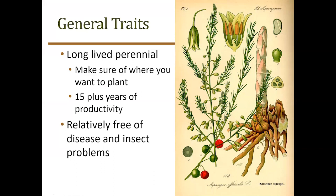With asparagus especially, it's important to understand the general traits and biology of the plant because it is unique compared with many vegetable plants. The main fact is that it is a perennial — a fairly long-lived perennial. You need to think carefully about site selection. You can easily get 15-plus years of productivity, and I've heard of plantings lasting 20 or more years. With good care it can be very productive for many years. It is relatively free of disease and insect problems and handles Midwest conditions fairly well.